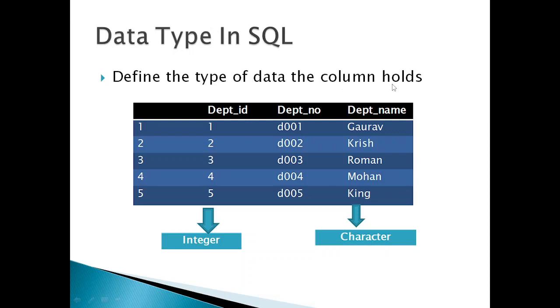You can see here department id, department number and department name. This could be index or the number. And so department id, you can see the number 1, 2, 3, 4 and 5.